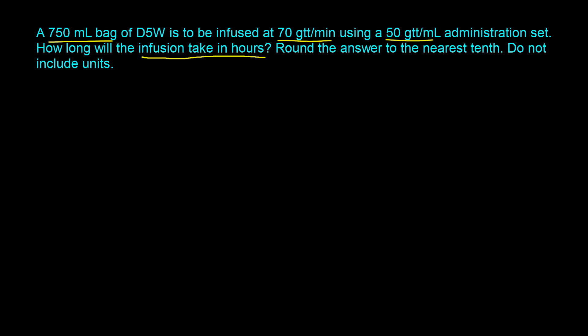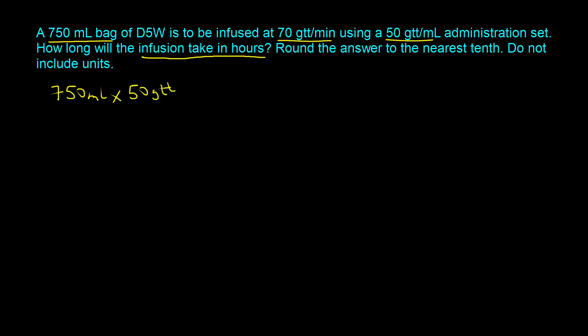There are a number of ways we can proceed, but the first thing we want to do is start with the volume of the bag being infused — 750 ml of D5W. To get rid of the milliliter unit, we multiply by the calibration factor: 50 drops per milliliter. In dimensional analysis, you can cancel units only when one appears in the numerator and the same appears in the denominator, so the milliliters cancel out and we are now in drops.